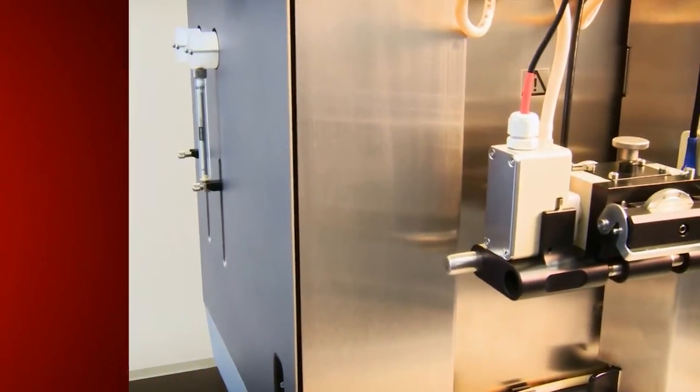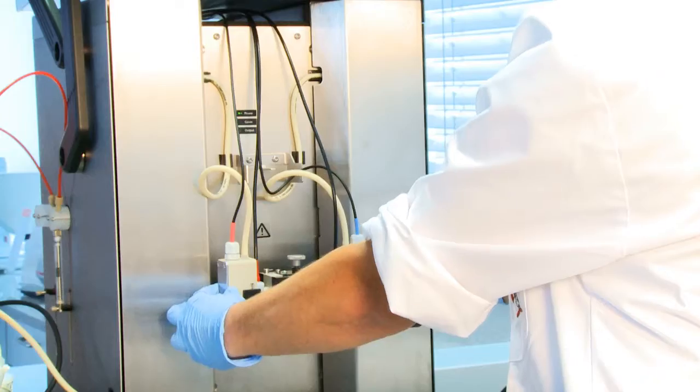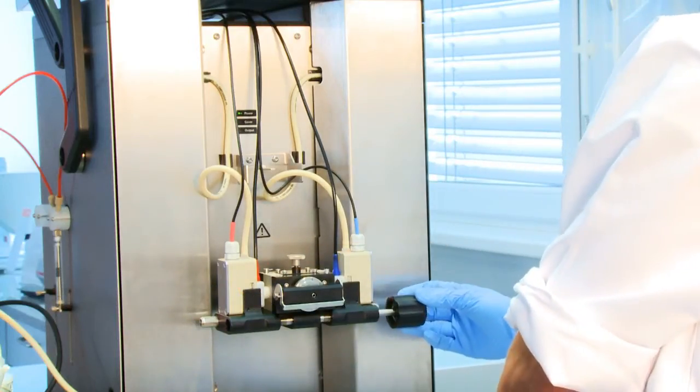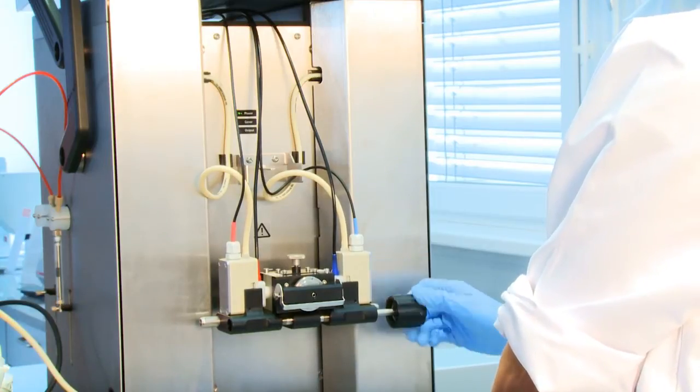This is the adjustable gap cell for the Surpass Electrokinetic Analyzer. It's a measuring cell for small rectangular pieces of flexible or rigid planar samples.